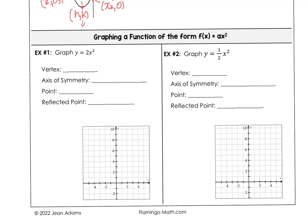In example one, we want to graph 2x squared. This is going to have a vertex at 0, 0. If we substitute x equals 1, then y equals 2 times 1, so y would be 2. So we have the point 1, 2, and we know 0, 0 is our vertex. If we reflect that point, that would be negative 1, positive 2. The axis of symmetry is through the middle at x equals 0.